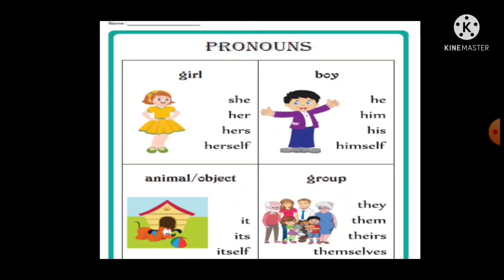How do we mention pronouns? Subject pronoun, object pronoun, possessive pronoun. Girl: she, her, has, herself. Boy: he, him, his, himself. Animal: it, its, itself. Group: they, them, their, themselves.